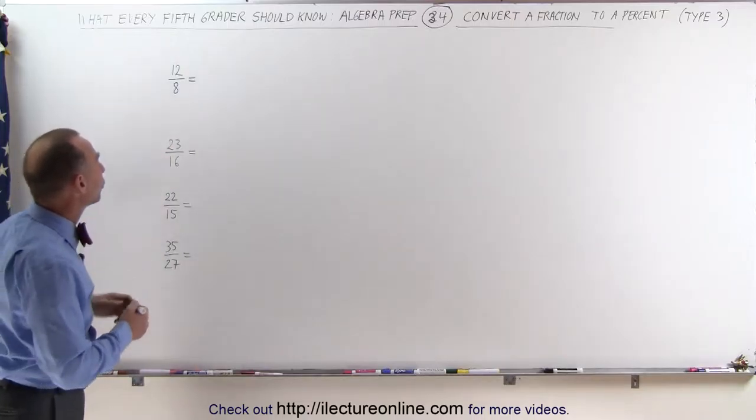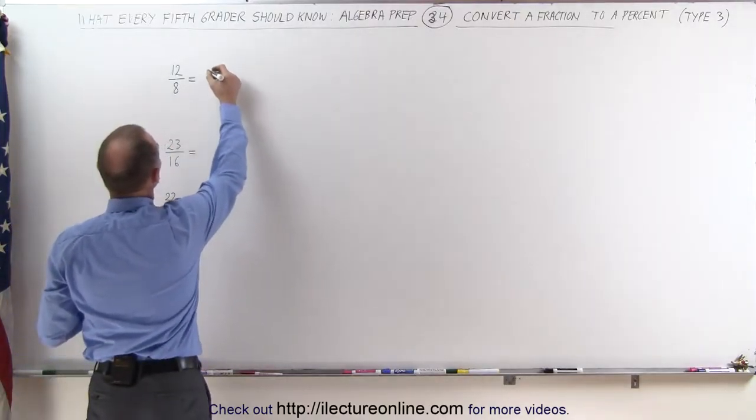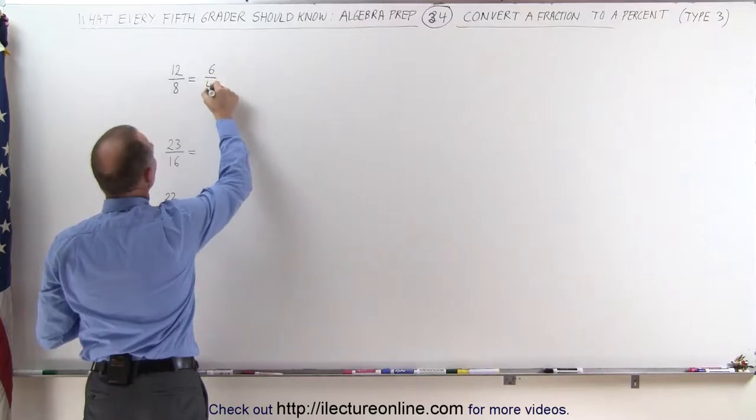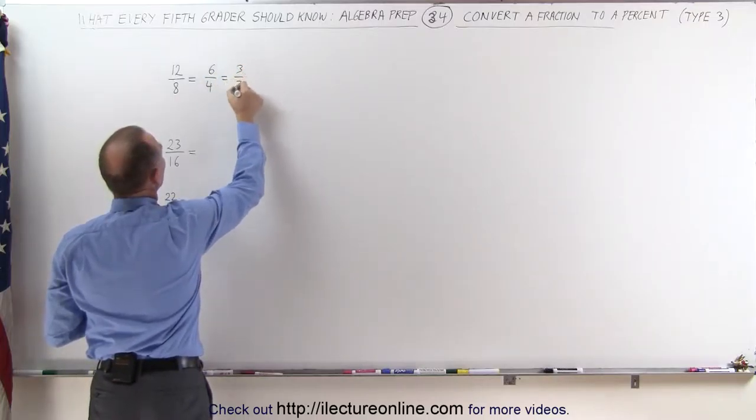And yes, indeed, we can divide both the numerator and the denominator by 2. This gives us 6 divided by 4. And then again by 2, this gives us 3 divided by 2.